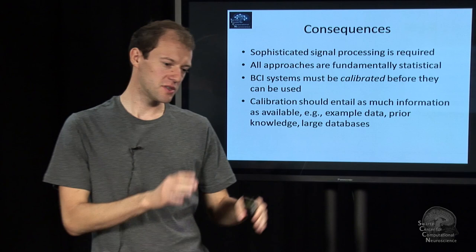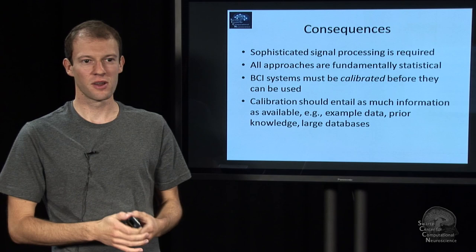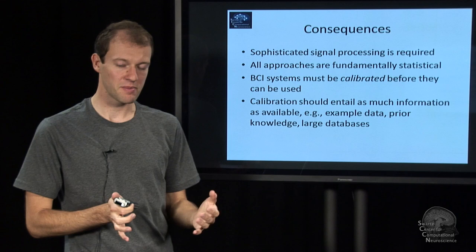That may include example data, like here's a chunk of EEG where the person was surprised. Here's one where he wasn't surprised. Here's another where he was surprised and so on. That's extremely useful. And other prior knowledge that you may have such as, I think surprise happens here in the brain. Or a database which contains data from 100 people who had that same kind of phenomenon expressed in them, which you can use to constrain your solutions.